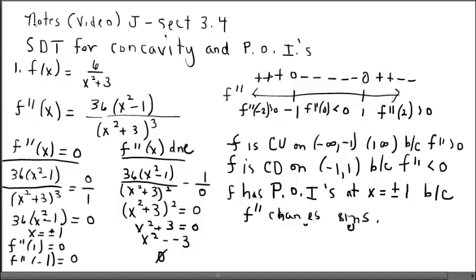The graph goes from concave up to concave down, then back to concave up at those zeros. We'll put it all together later and produce a graph, but right now we're focusing on being able to look at these problems and make sure we understand how to report our answers.